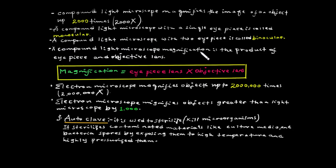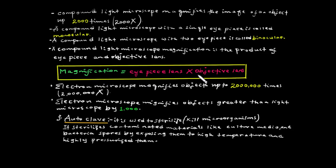The magnification of a compound light microscope is the product of the eyepiece lens and the objective lens. The formula is: magnification power equals eyepiece lens times objective lens. This is an important calculation.